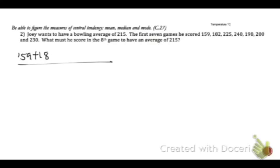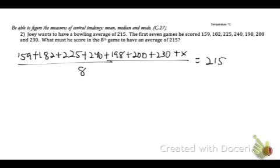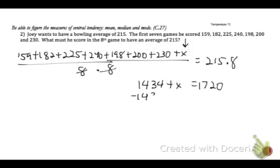But what we're missing here is we're missing one of them. So we're going to put an x placeholder for that value. So I'm going to pause and set up the problem, and you do that as well. So now our problem is set up. So we have all of those 7 bowling scores plus an x placeholder for the score in his 8th game, divided by 8, equaling the average that he wants. Now, to get rid of this 8, we just undo it. So we're going to multiply. 215 times 8 is 1,720. And when you add up all those bowling scores, you get 1,434, plus that other score. Now subtract 1,434 from each side, and that will give you the score that Joey needs.